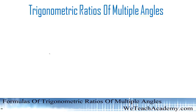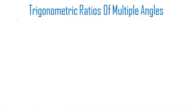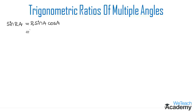Welcome to vdchacademy.com. In this video we are going to discuss all the formulas of trigonometric ratios of multiple angles. Let us begin with sine 2A, which is equal to 2 sine A cos A. Sine 2A is also equal to 2 tan A divided by 1 plus tan square A.